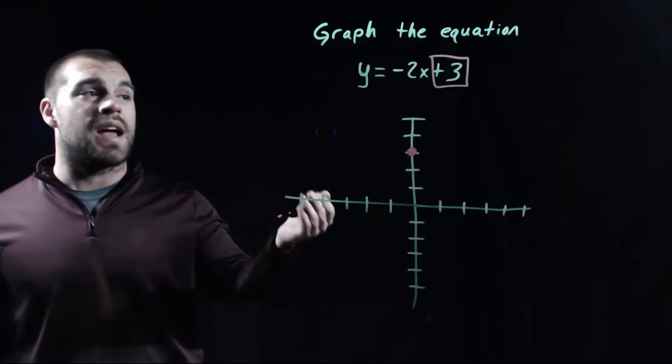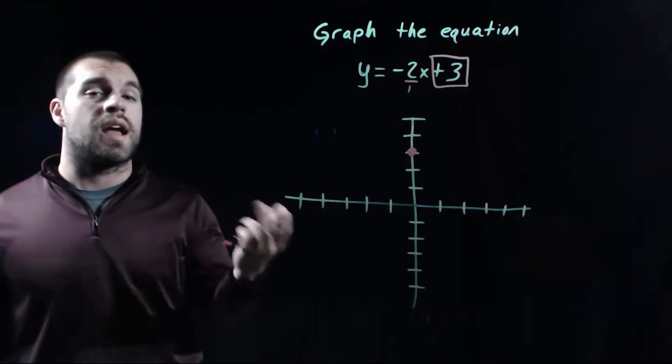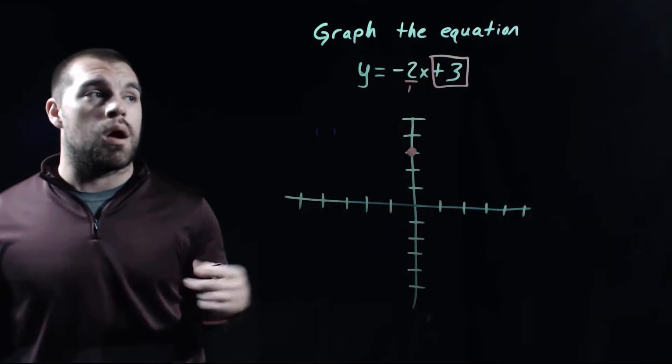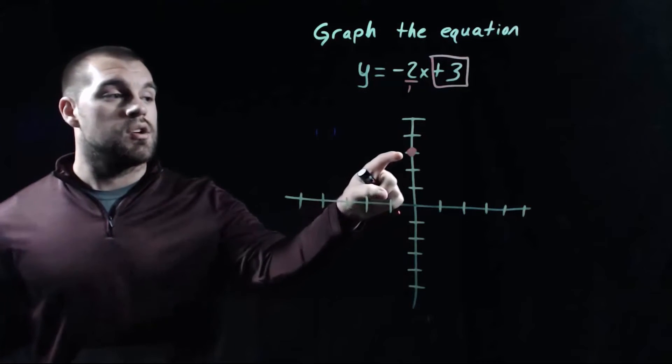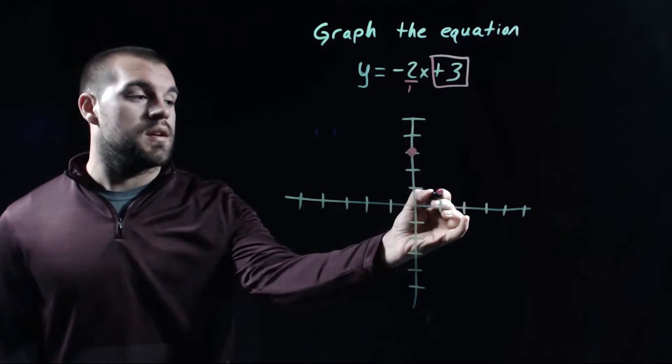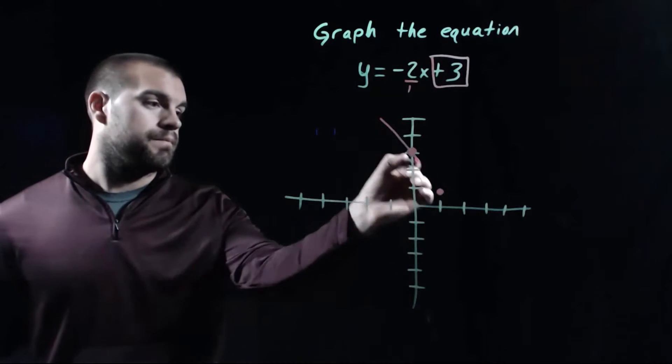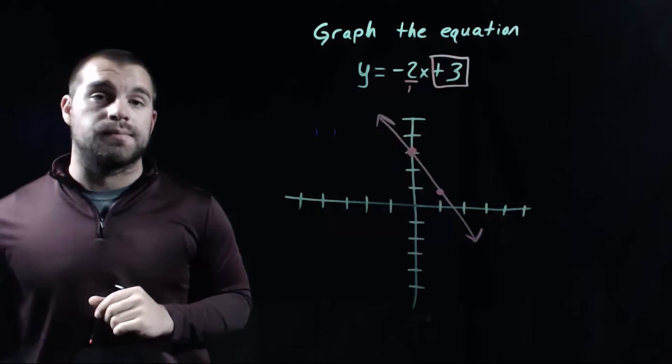Then the slope is negative 2, and I'm going to turn it into a fraction by putting it over 1. So it's negative 2 over 1. If we think about slope as rise over run, this is saying that we should go down two spaces and then to the right one space. So I'm going to count down two spaces and to the right one space and put my next dot there. And then all I have to do is draw in the line. So there's the graph for the equation y equals negative 2x plus 3.